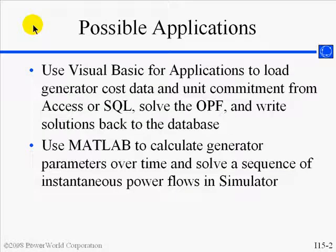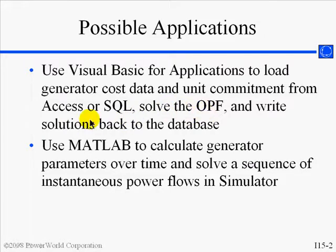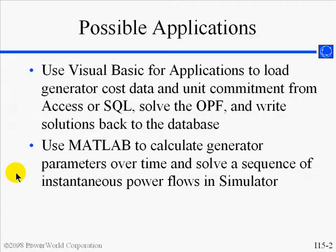Here we see a couple examples of how SimAuto can be used to automate an analysis process. For example, you could use Visual Basic for Applications in Microsoft Excel or Access to pass information into Simulator, perform some analysis such as solving an optimal power flow, and then write the results back into a database. You could also use an external program to perform a unit commitment function, such as calculating generator parameters over time and then solving a sequence of hourly power flows in Simulator.